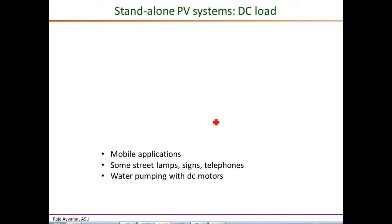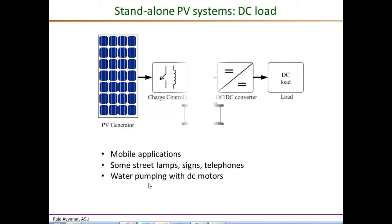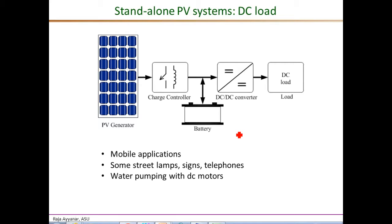First let's look at standalone PV inverters supporting a DC load. Applications could include mobile applications supporting many electronic devices, street lamps, signposts, telephones, or at a slightly higher power level, water pumping using DC motors. Since solar energy is intermittent and in a standalone system there is no grid, we essentially need a battery storage element to continue supporting the load when there is no sun.